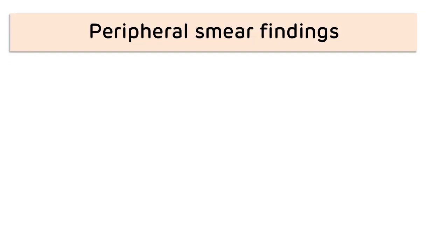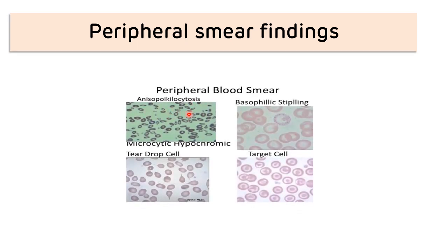Peripheral smear findings in thalassemia include anispoikilocytosis — alteration in the size and shape of RBCs — microcytic hypochromic RBCs, basophilic stippling (a characteristic finding due to cytoplasmic granules in basophils), presence of teardrop cells, and presence of target cells. These are the peripheral smear findings seen in thalassemia.